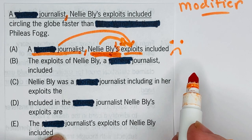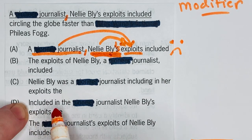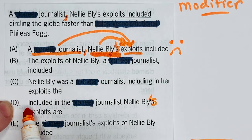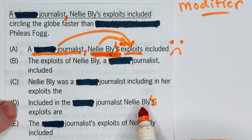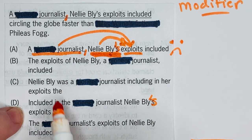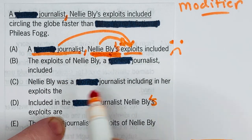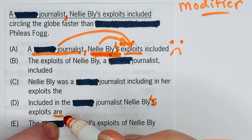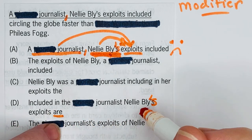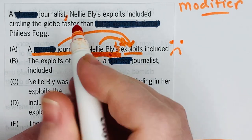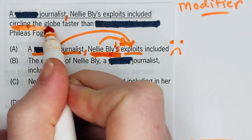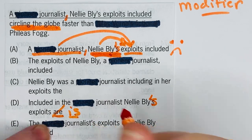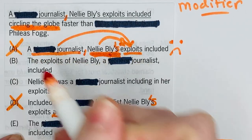If we take a look at D, they also have the possessive but they change the sentence around. It says 'included in the journalist Nellie Bly's exploits are circling.' So we have an inverted noun-verb agreement issue. The verb is 'are,' but what is included in the journalist Nellie Bly's exploits? It's circling the globe — and circling the globe is just one action, so we wouldn't use 'are,' we would use 'is.' So we can get rid of D.